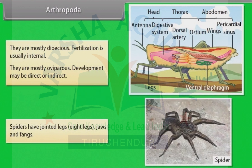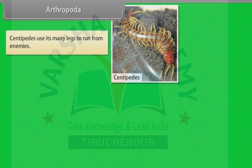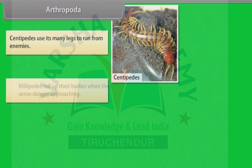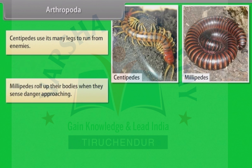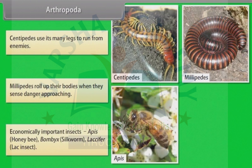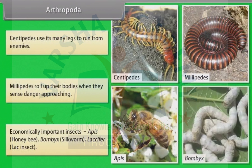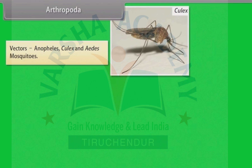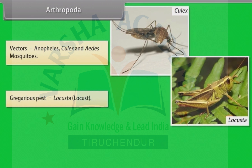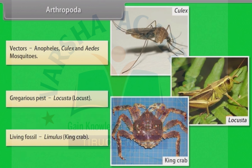Spiders have jointed legs, eight legs, jaws and fangs. Centipedes use their many legs to run from enemies. Millipedes roll up their bodies when they sense danger approaching. Economically important insects include Apis, that is honeybee; Bombyx, that is silkworm; and Laccifer, that is lac insect. Vectors include Anopheles, Culex and Aedes mosquitoes. Gregarious pest: Locusta, that is locust. Living fossil: Limulus, or king crab.